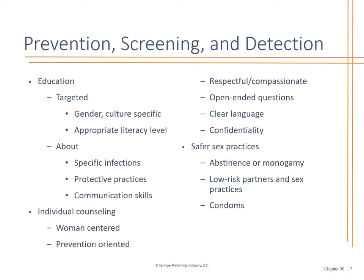Education should be gender-specific, culturally specific, and literacy-appropriate. Focus on protective practices, counseling, and talking about prevention. Prevention is the key — make sure you have that open discussion and that they are comfortable talking with you about it. Safe sex practices include abstaining from sex, having only one or low-risk partner, using barrier methods such as condoms, and considering birth control to prevent pregnancy when having multiple partners.